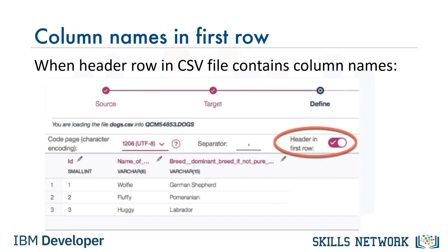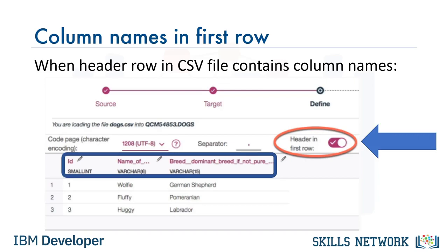CSV files can have a header row that contains the names of the attributes. If you're loading the data into the database using the visual load tool in the database console, ensure the 'header in first row' option is enabled. This will map the attribute names in the first row of the CSV file into column names in the database table, and the rest of the rows into the data rows in the table, as shown here. Note that the default column names may not always be database or query friendly, and if that is the case, you may want to edit them before the table is created.